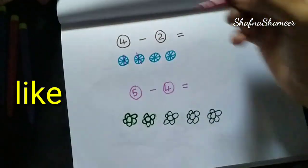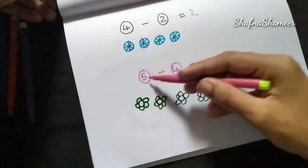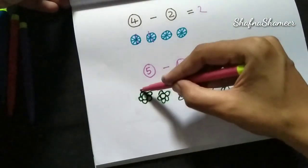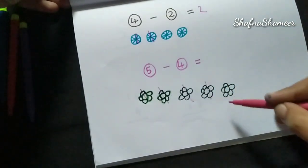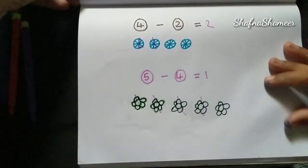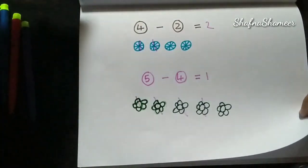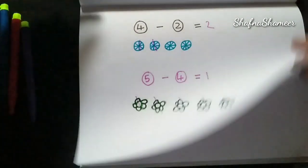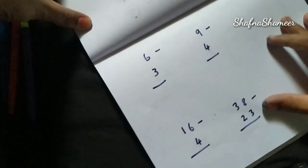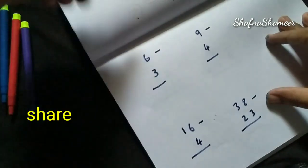1, 2 — balance. 1, 2, 1, 2. 5 minus 4: 1, 2, 3, 4, 5 — balance 1. So we have numbers and pictures. 6 minus 3 — so here we are.